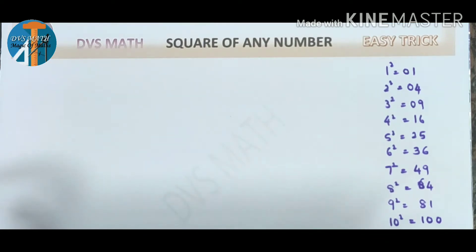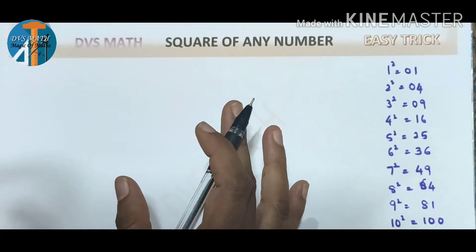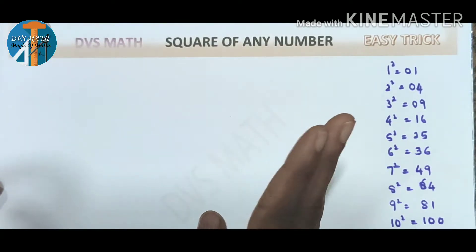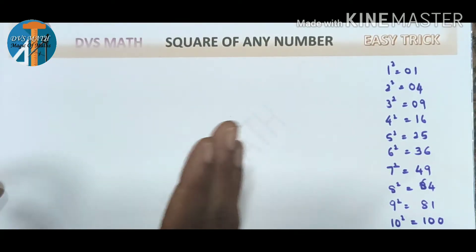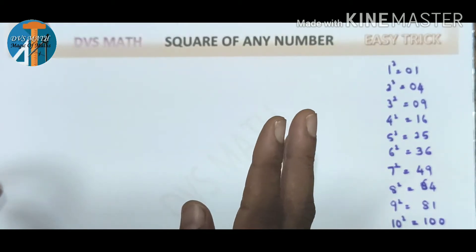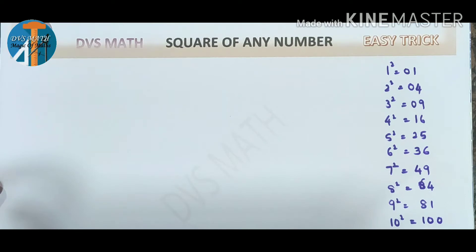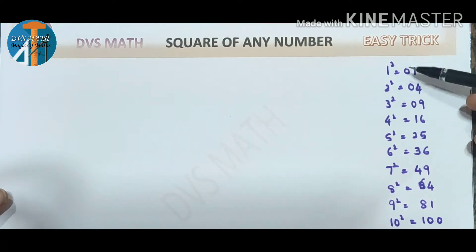We are going to do the next trick: square of any number. We will use this simply. First, we use a base number of 100, and a number of 10,000. We are going to use all square numbers.